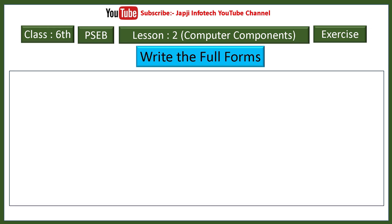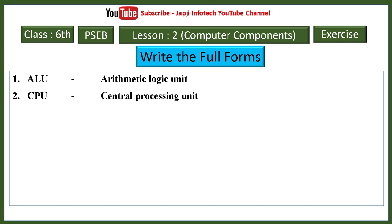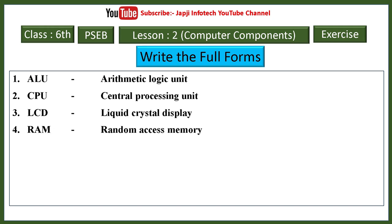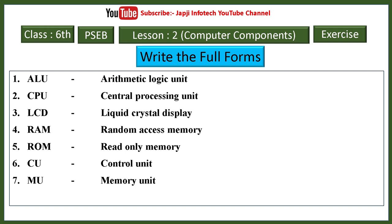Now we learn the full forms in lesson number two. ALU stands for arithmetic logic unit. CPU stands for central processing unit. LCD stands for liquid crystal display. RAM stands for random access memory. ROM stands for read only memory. CU stands for control unit. MU stands for memory unit. IPO stands for input processing output.